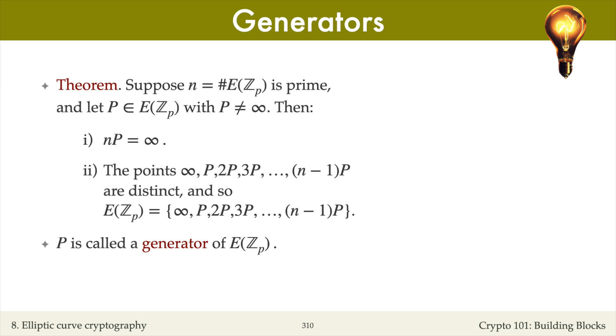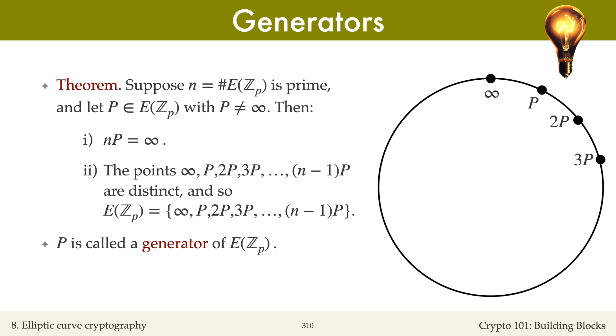We can visualize the n points on the elliptic curve as being arranged in a cycle. The cycle begins at 1P, then we move on to 2P, 3P, 4P, and so on, up to n minus 3P, n minus 2P, n minus 1P, 0P, and we're back to P again.